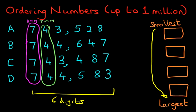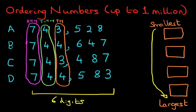Let's keep going. We're now down to the thousands. So those are the thousands. We've got three, four, three, four. So two sets of numbers are three and two sets are four.